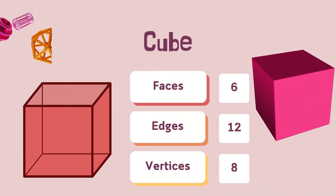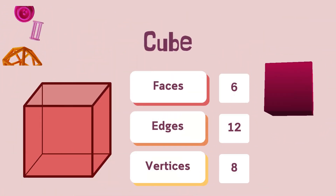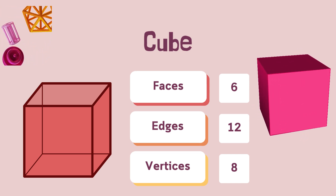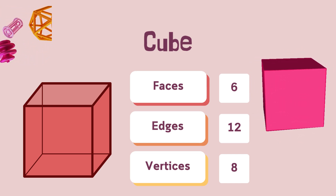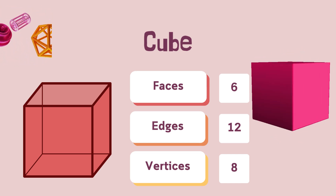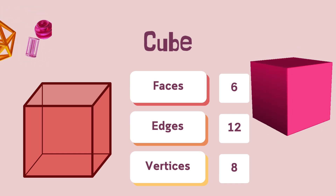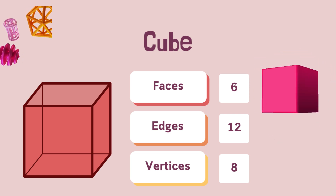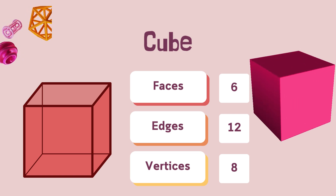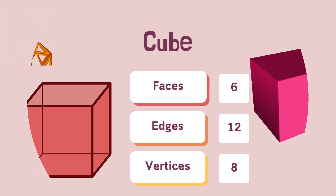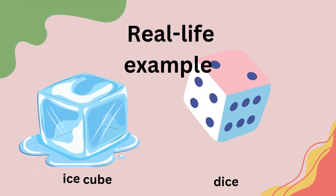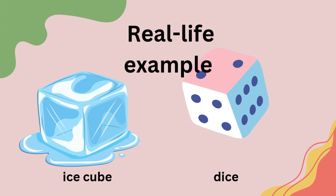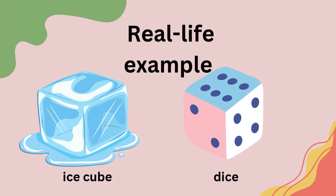Hi there. I'm a cube. I have 6 square faces, all the same size. I have 12 edges — they're the lines where my faces meet. And I have 8 vertices — those are my corners. I look like an ice cube or a dice you roll in a game. Isn't that cool?